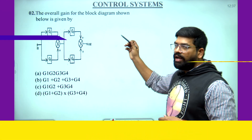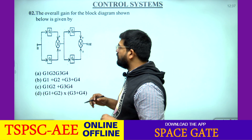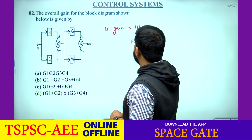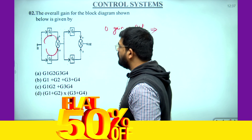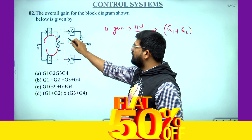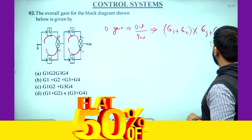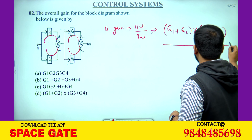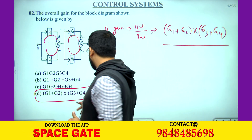Move on to the next question: overall gain for the block diagram shown in figure. We need to find the overall gain, which is the ratio of output to input. These two blocks are connected in parallel, so we add their gains: Z1 plus Z2. The result is cascaded with another parallel branch, so we multiply: Z3 plus Z4. The fourth option, (Z1 + Z2)(Z3 + Z4), is the correct answer.